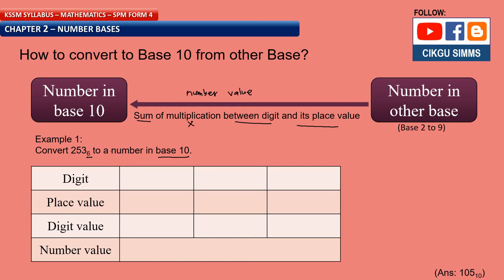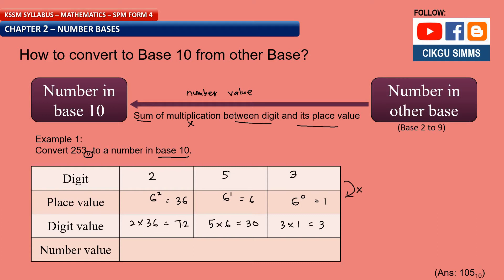We want to convert 253 base 6 to a number in base 10. The digits are 2, 5, 3. To find the place value, it depends on the base. So for base 6: 6 to the power of 0, 6 to the power of 1, 6 to the power of 2. The values are 1, 6, and 36. You multiply each digit by its place value: 3 times 1 is 3, 5 times 6 is 30, 2 times 36 is 72. This gives the digit values.